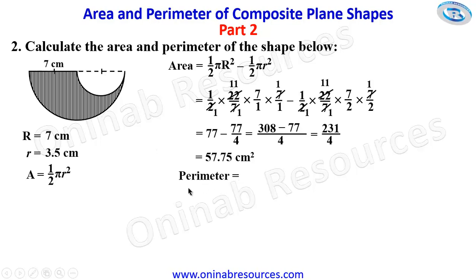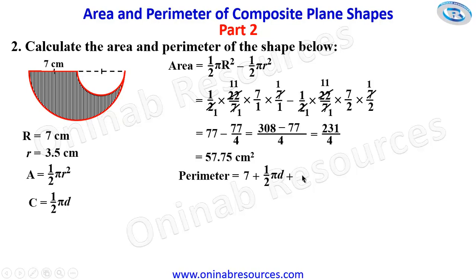We then go ahead to calculate the perimeter. The perimeter of a composite shape of this nature is the sum of the distances around the shape. Starting from one point: from here to this place is 7 centimeters, plus the circumference of this small semicircle — the circumference of any semicircle is half pi d — so we have half pi times small d. Then from here to the starting point is plus half pi times capital D, where capital D is 14 centimeters. Substituting: 7 plus 1 over 2 times 22 over 7 and our small d is 7.